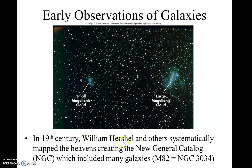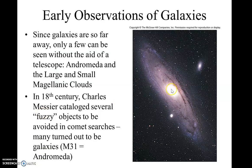Back in the 19th century, William Herschel — a famous English astronomer, the guy who discovered the planet Uranus — came up with what's called the New General Catalog, or NGC. A lot of times when you see a particular astronomical object, it'll have an NGC number.